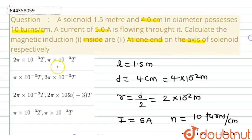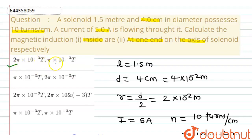So the correct answer for our question will be option A: magnetic field inside the solenoid is 2π × 10⁻³ tesla, and magnetic field at one end on the axis of the solenoid is π × 10⁻³ tesla. Option A is the correct answer.